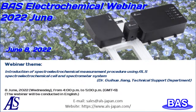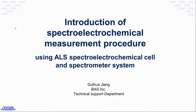The topic is Introduction of Spectro-Electrochemical Measurement Procedure Using ALS Spectro-Electrochemical Cell and Spectrometer System. In our previous lecture, we introduced the basic principle of the Spectro-Electrochemical Method, typical SEC methods, and some application examples of the UV-visible absorption spectrum method using optical transparent electrochemical cells, and showed what kind of research the SEC methods were applied for.